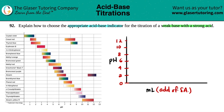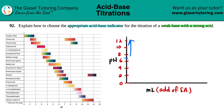When titrating, we start with only a weak base. Since it's basic, the pH must be greater than seven, so we always start high on the graph — somewhere around pH 10 or so.